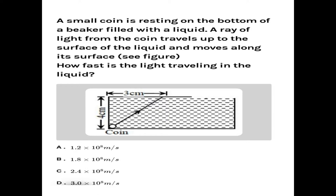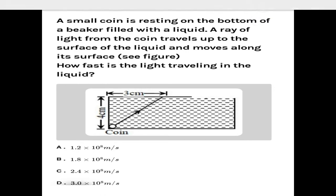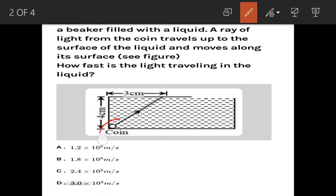As given in the figure, if you observe, a coin is resting here and from this coin light is coming out, and the ray is moving parallel to the medium. It is not going out of the medium and it is not reflecting inside the medium. This means the light ray is going parallel to the medium, which means the ray is incident at the critical angle.